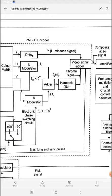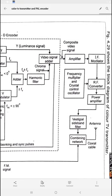Within the video signal adder, the luminance and chrominance signals get added and a composite video signal is generated — the output of your video signal adder is the composite video signal. This composite video signal is applied to an amplifier for amplification. Then it passes through different stages: first the IF modulator, then the RF converter, then the power amplifier. The input to the RF converter is a frequency multiplier and crystal-controlled oscillator, converting the signal into radio frequencies suitable for broadcasting. The radio-frequency converted signal is then applied to the power amplifier for power amplification.